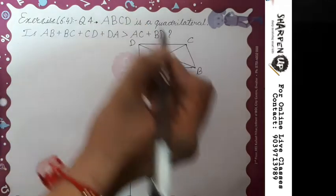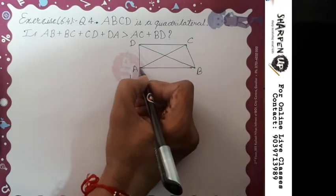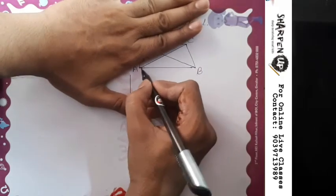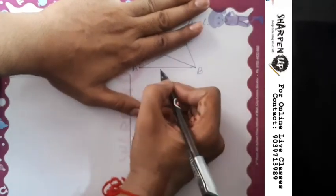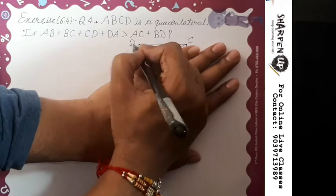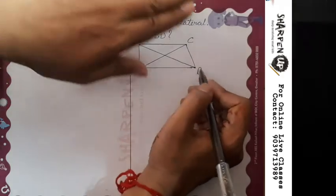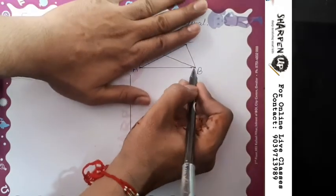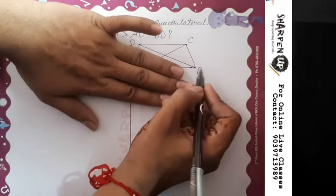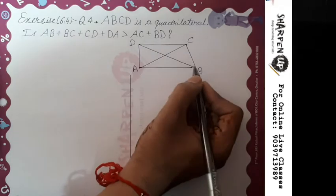For this, we take A as a vertex. If I hide the upper part of this quadrilateral, it forms triangle ACB. If I hide the lower part, it forms triangle ACD. Similarly, taking B as a vertex, hiding the upper part forms triangle BCA, and hiding the lower part forms triangle BCD. So we find four triangles.